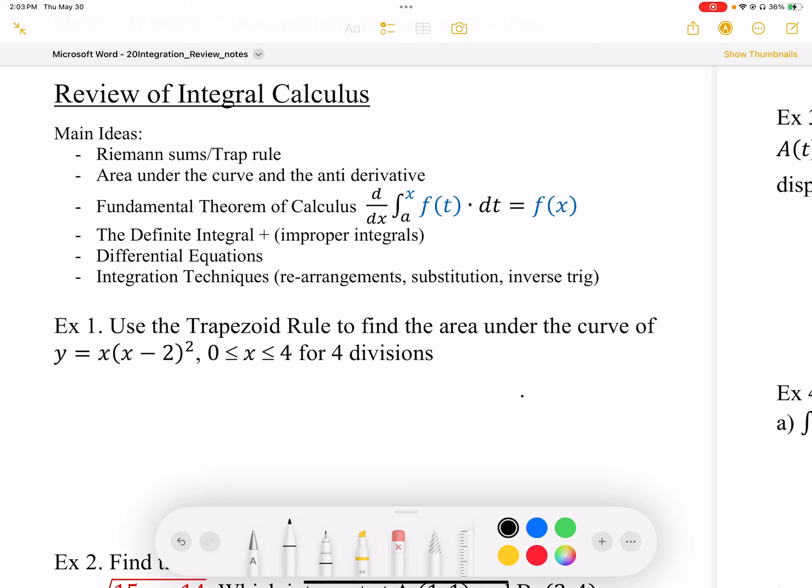The main ideas in this unit are Riemann sums and trapezoid rules for finding the area underneath a derivative function. That area represents a displacement on the antiderivative function. We want to understand the relationship between the area under the curve and the antiderivative.